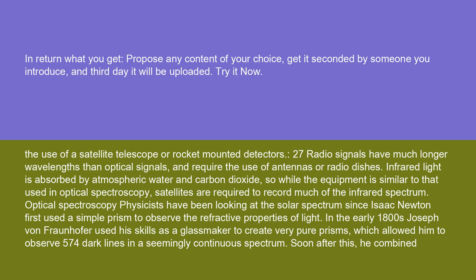X-ray and ultraviolet spectroscopy require the use of a satellite telescope or rocket-mounted detectors. Radio signals have much longer wavelengths than optical signals and require the use of antennas or radio dishes. Infrared light is absorbed by atmospheric water and carbon dioxide, so while the equipment is similar to that used in optical spectroscopy, satellites are required to record much of the infrared spectrum.